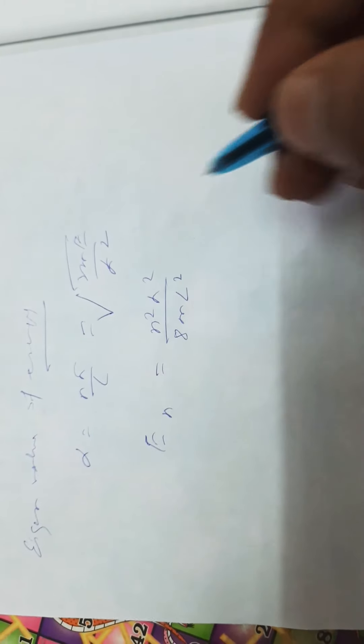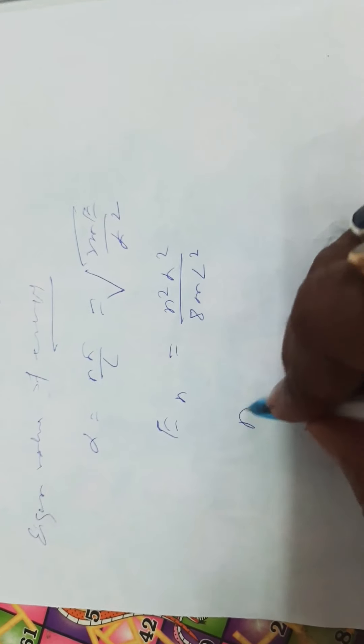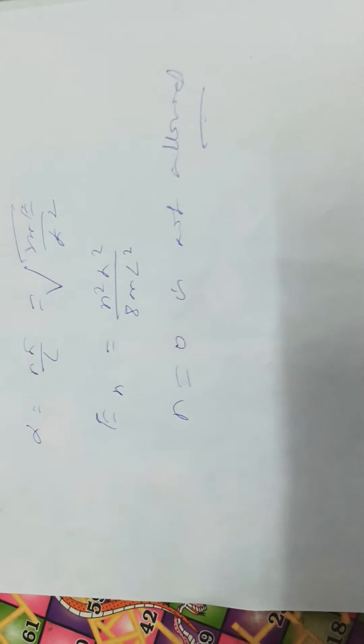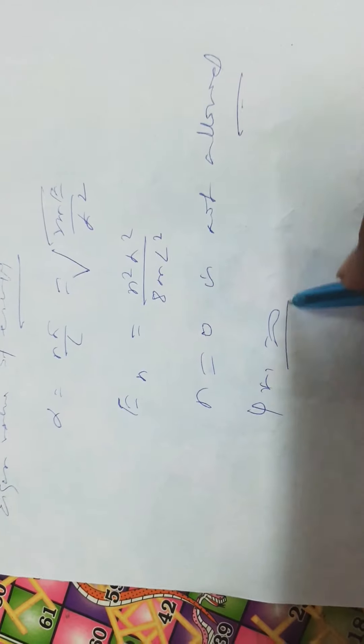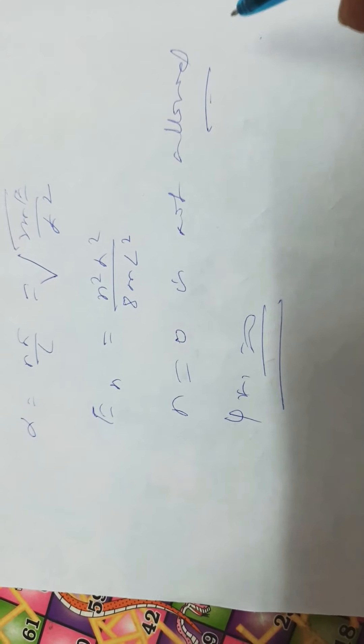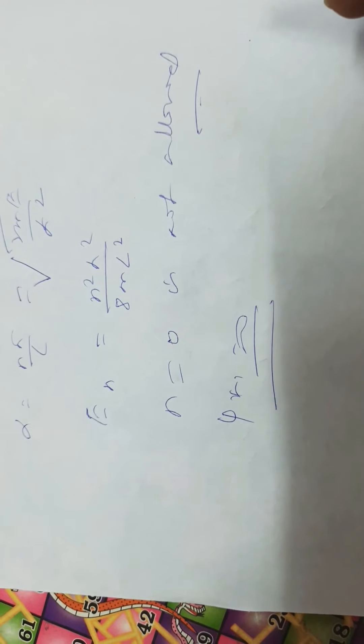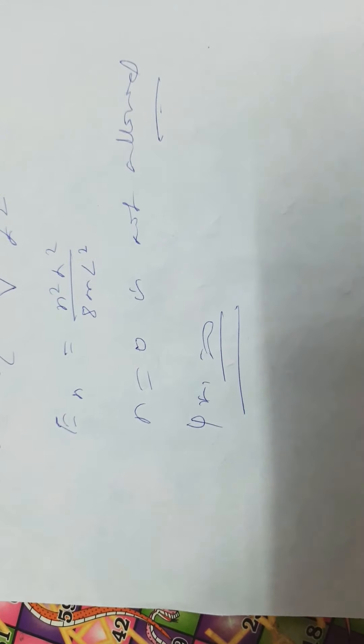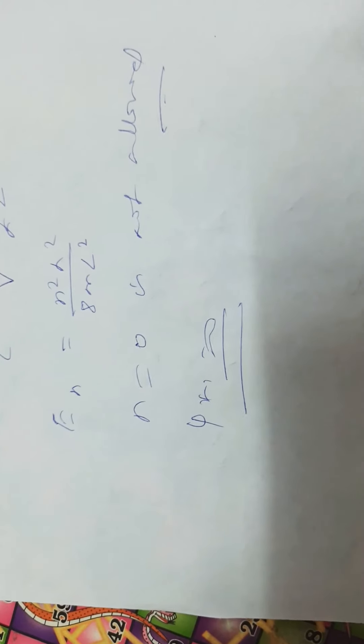Here n can be 1, 2, 3 — it is an integer. n equal to 0 is not allowed because it would make ψ(x) equal to 0 everywhere, meaning the particle is not present at all. This also means the particle cannot have zero energy. According to classical mechanics all energy values including 0 are possible, but in quantum mechanics the particle can only take discrete energy values.